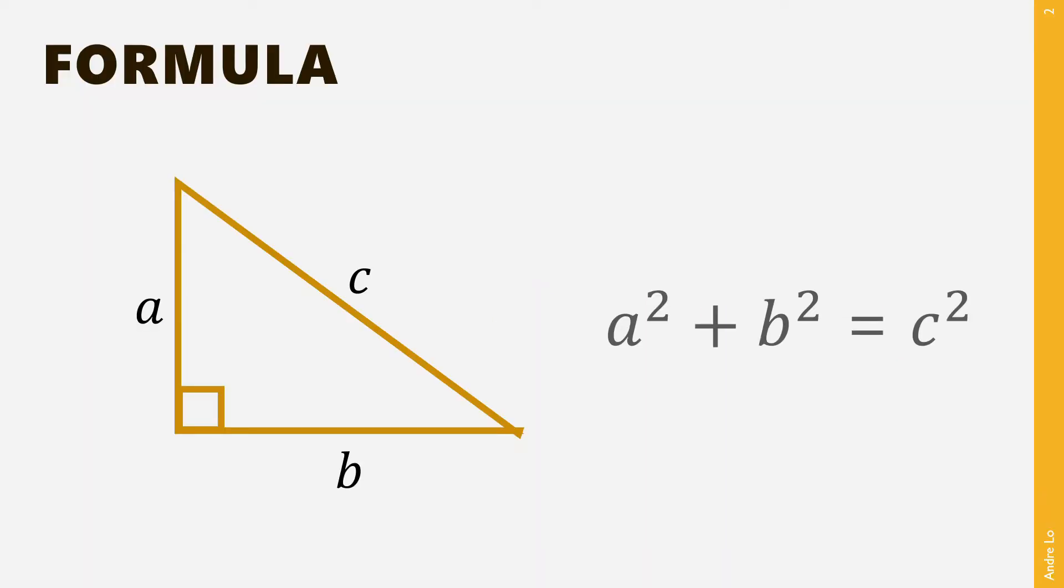Remember that Pythagoras' theorem tells us that in a right-angled triangle, as shown in the diagram here, a squared plus b squared equals c squared.